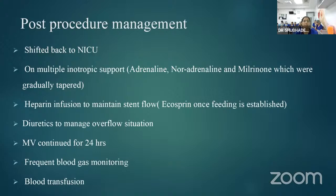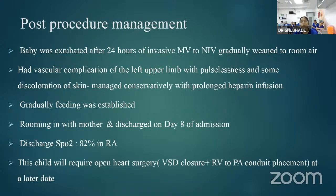Post-procedure, the baby was shifted back to NICU on multiple inotropes — adrenaline, noradrenaline, and milrinone — which were gradually tapered. Dipyridamole infusion was started to maintain stent flow, and the baby was later shifted to ecosprin. Diuretics were given to manage fluid overload. Mechanical ventilation continued for 24 hours. Blood transfusion was given due to acute blood loss during the procedure. Baby was extubated after 24 hours to NIV, gradually weaned to room air.